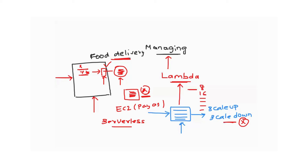EC2 is basically pay-as-you-use, but you have to take care of scaling up, scaling down, and when you don't require the EC2 instance, you have to manually go and tear it down. With Lambda, everything happens automatically — that's why this architecture is called serverless. There is no server you have to take care of; once the requirement is there, AWS creates the server, and once it's done, AWS tears it down.